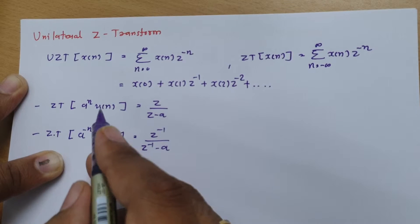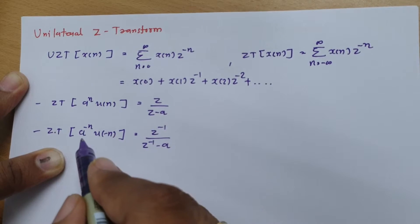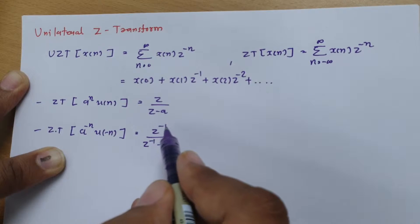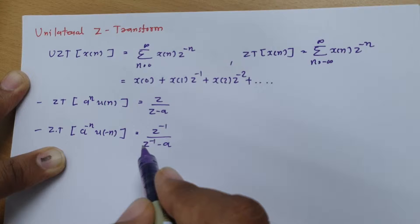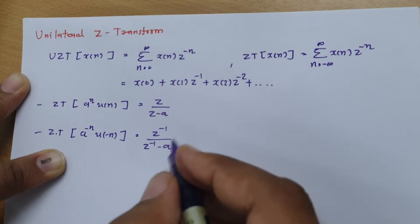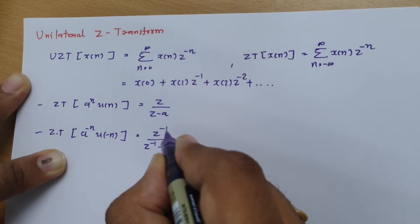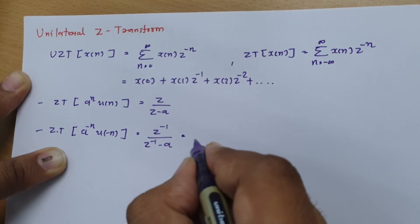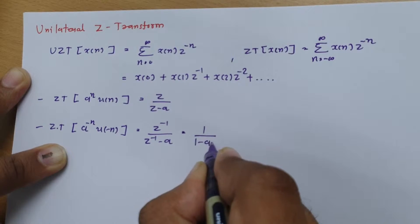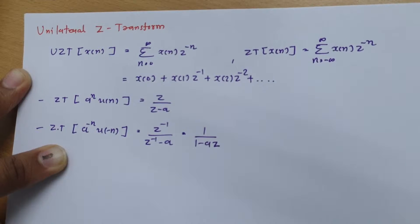So instead of n we have placed minus n — this is the time reversal of the signal. The Z-transform for the time-reversed signal is: -Z^n / (Z^(-n) - a). If you further simplify, Z^(-1) means 1/Z, resulting in 1 / (1 - aZ). This is the bilateral Z-transform result we have already done.